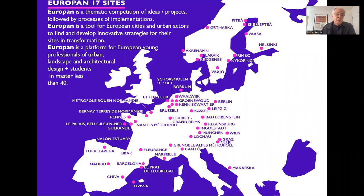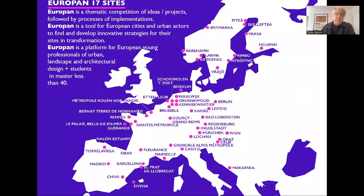Each session we have nearly 1000 answers to analyze by juries, and at the end we have a group of 80 projects. It's a thematic competition, and the last session was called Living Cities — really related to the transformation of areas marked by the Anthropocene period, areas that must be transformed to adapt and find a sort of hybridity between nature and the built environment. I'll now let Chris give a theoretical introduction.